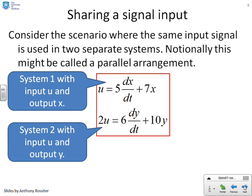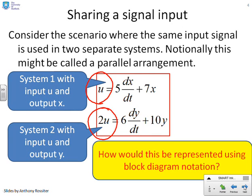So let's look at this different scenario. Here we've got two systems: U equals 5 dx/dt plus 7x, and 2U equals 6 dy/dt plus 10y. The main thing that you want to notice here is that both of these systems use the signal U. They share the same input. And we want to ask, how would we represent this scenario using block diagram notation?